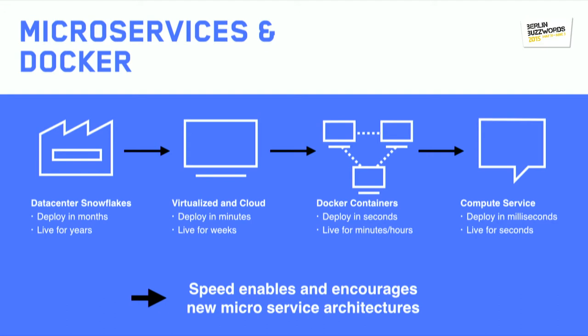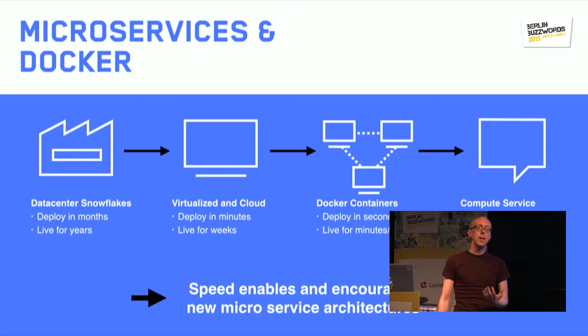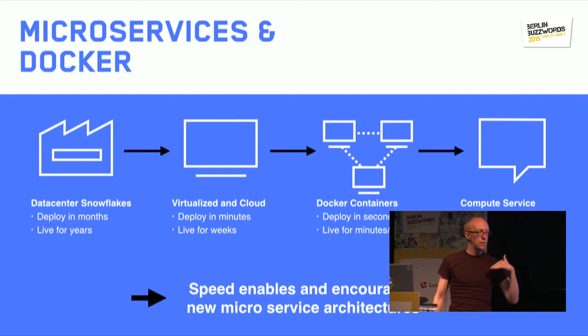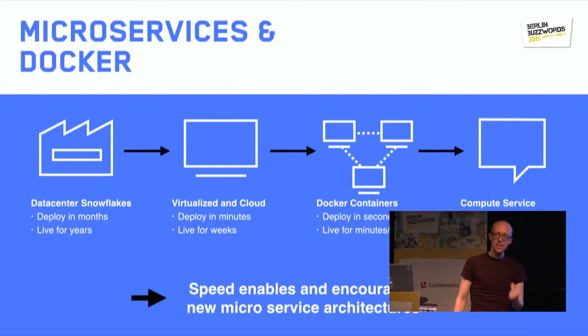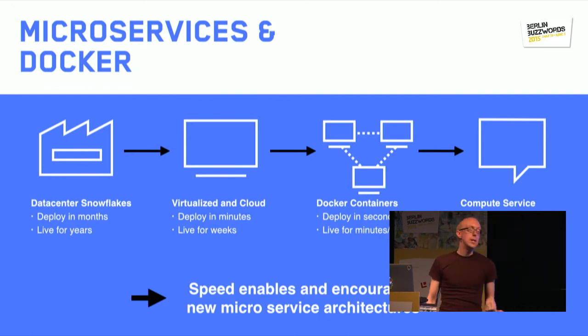More recently we've had things like containers — not a new concept, but more widely used in the past 18 months. And finally we're ending up with something like compute services, like AWS Lambda, where we've reduced the overhead of services even further to small, discrete services that do one particular thing for a very quick amount of time and come and go as quickly as we need them.